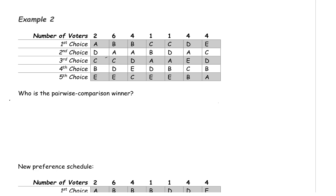In this video, we're going to take a look at something strange that can happen when we're using the pairwise comparison method to count votes, and one of the candidates drops out of the election. Here is the original preference schedule for the election, and we're going to figure out who the winner is using the pairwise comparison method.